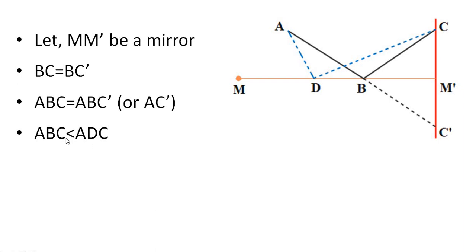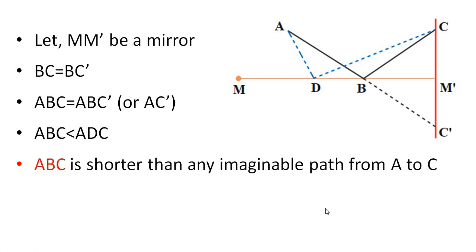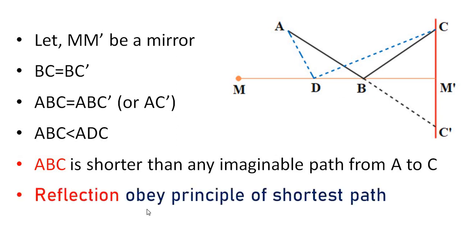Therefore, path ABC is less than ADC — that is, ABC is shorter than any imaginable path from A to C. So the actual path ABC is the minimum, meaning reflection obeys the principle of shortest path.